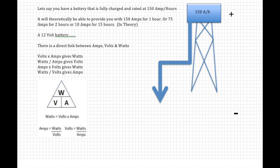But that doesn't really give us an idea of how much energy is in the battery. So there's a formula that we use. Let's take a 12 volt battery. There is a direct link between amps, volts and watts. Volts times amps gives you watts. Watts divided by amps gives you volts. Amps times volts gives you watts. So this is an electrical formula.